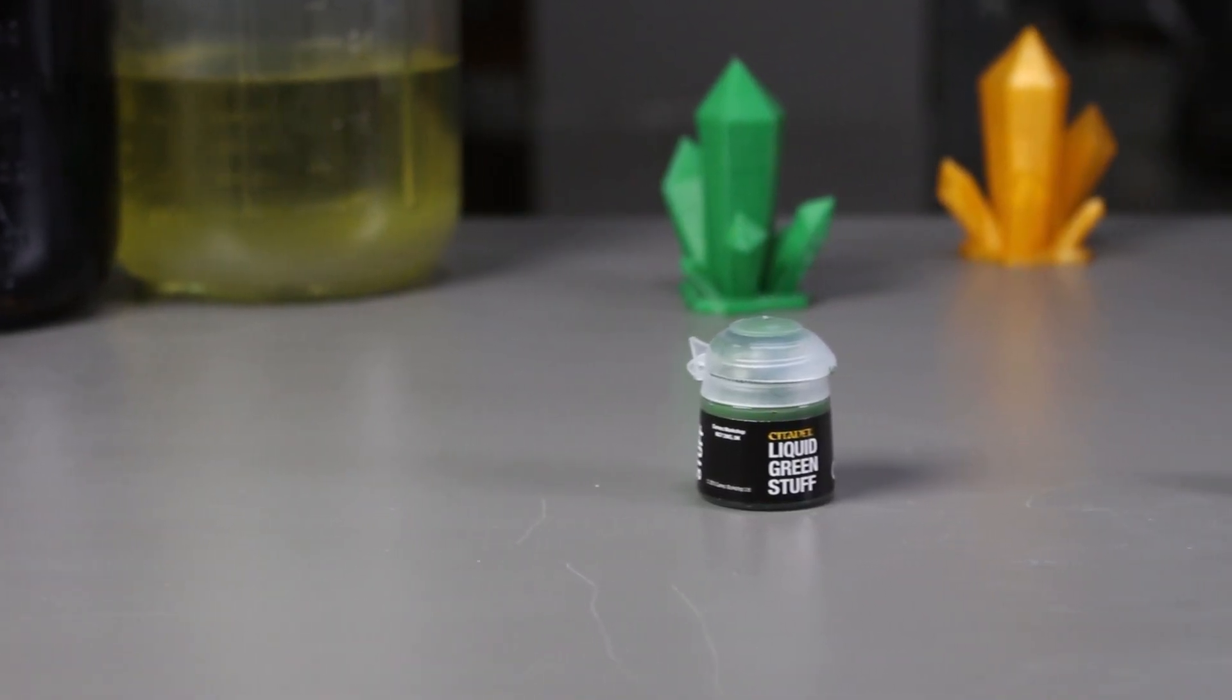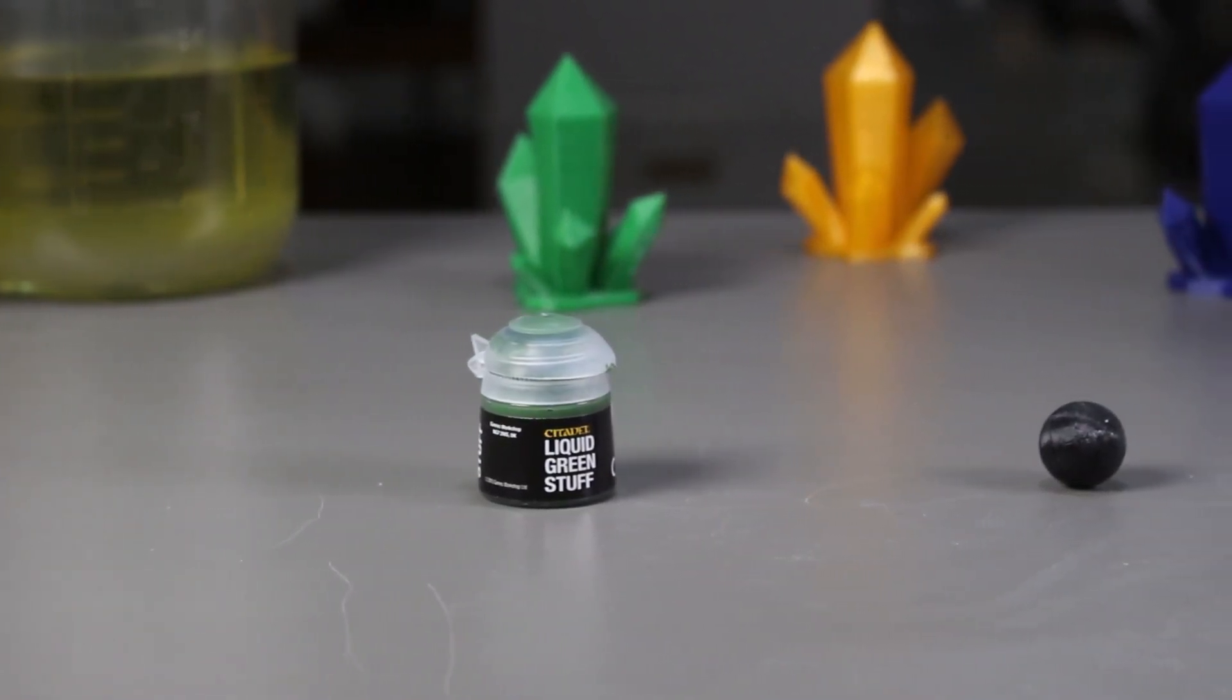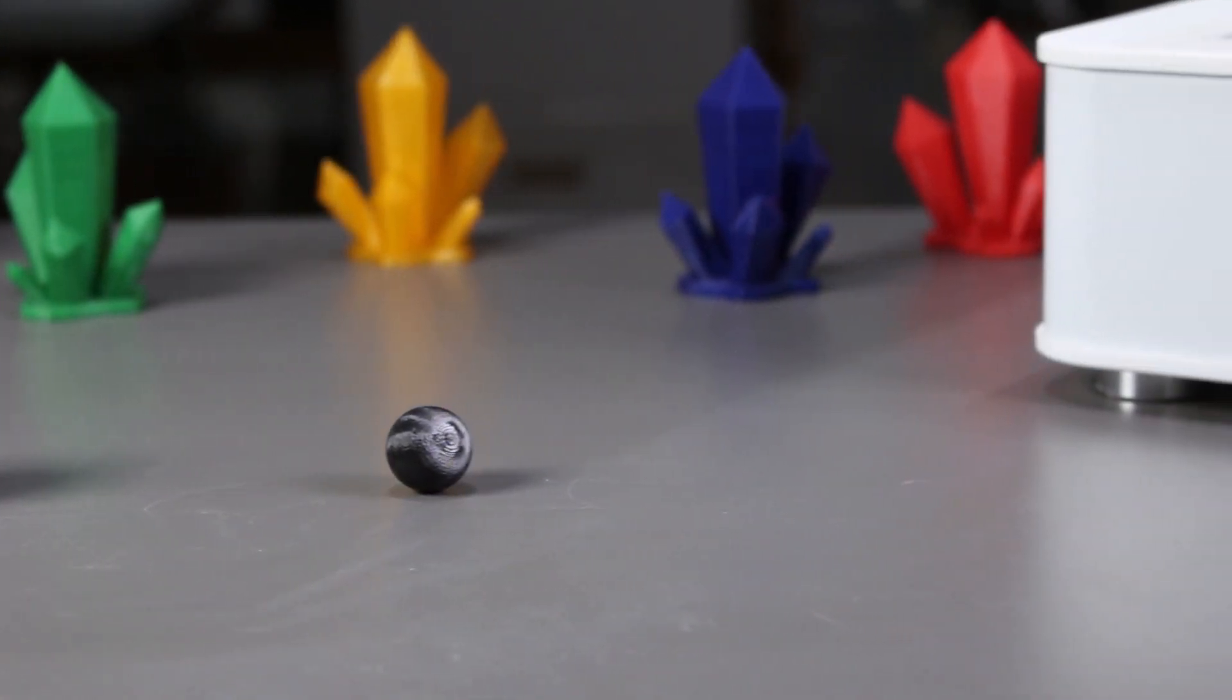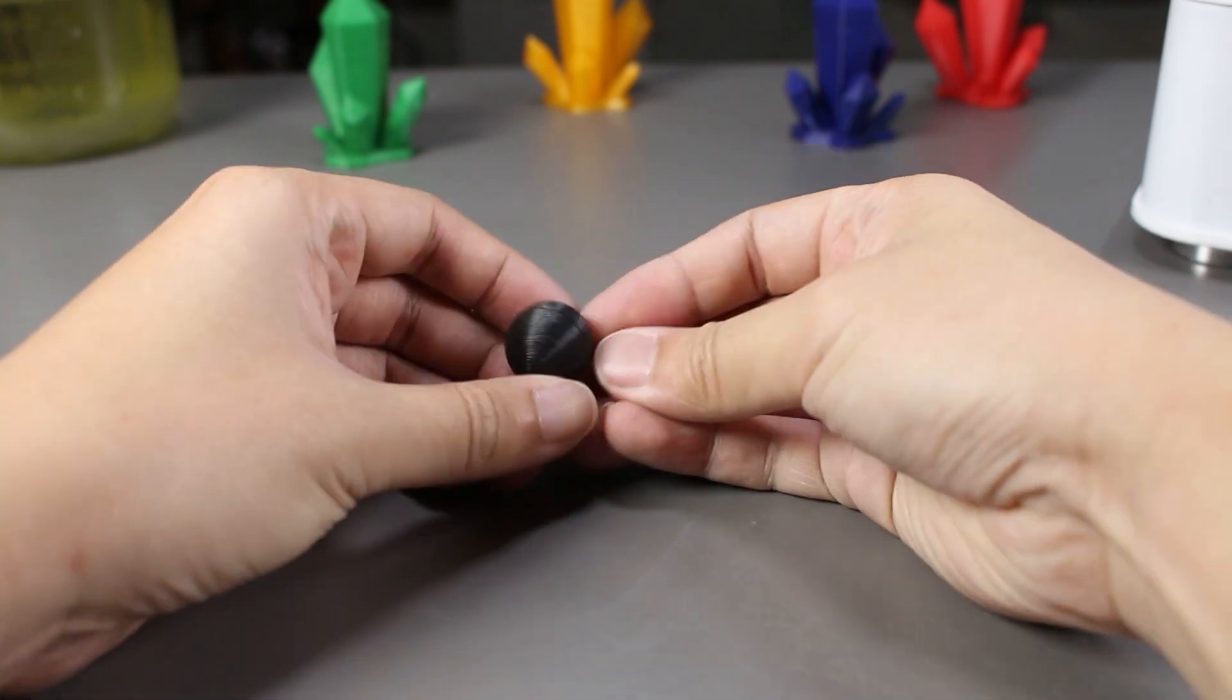This was one of the main uses for liquid green stuff - to fill in small gaps in Warhammer figures. So I'll try it out today with this ball that we printed with our 3D printer.